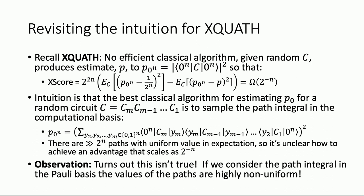But here's the observation: that's actually not true. If instead of the computational basis we expand the output probability in the Pauli basis, the values of paths are highly non-uniform. The idea is you can pick a single path very carefully. We can calculate what the value of that algorithm would be — a classical algorithm that simply evaluates the value of a single path in the Pauli basis. That's a very easy thing to do, and it already contradicts the XQuath conjecture — but only when D is sublinear. The score it achieves is something like two to the minus O(D), and if D is less than N, that's greater than two to the minus N.